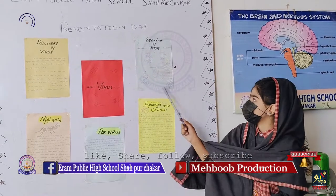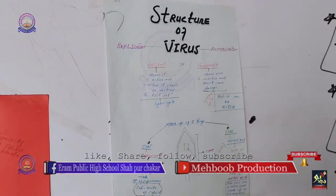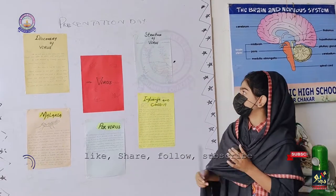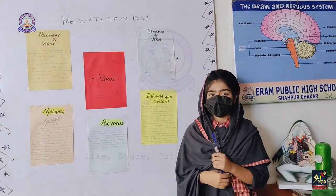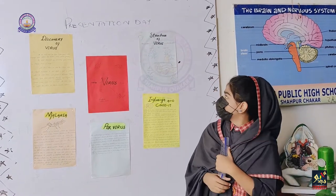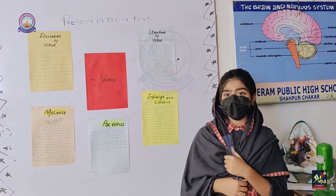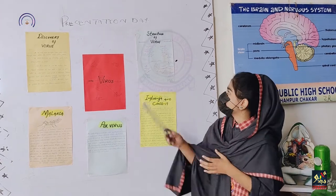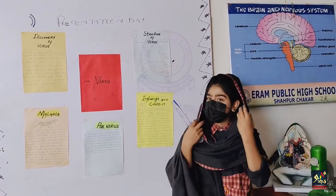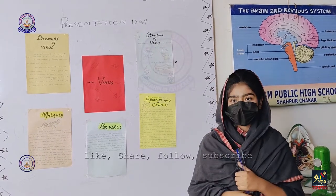Our next topic is the structure of virus. There are two types of virus: one is temperate and the second is violent. Violent means the virus is active, and if it is active it can start to destroy the cell — that is called the lytic cycle.